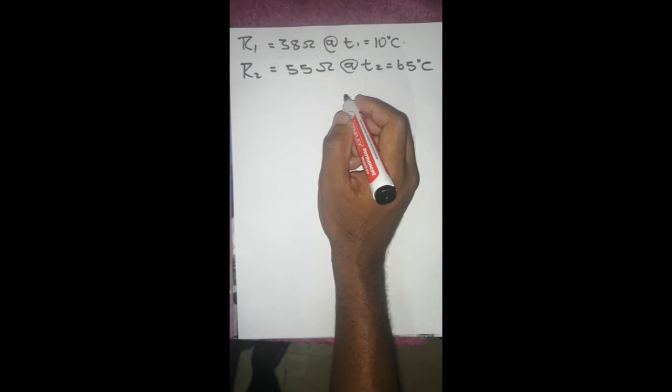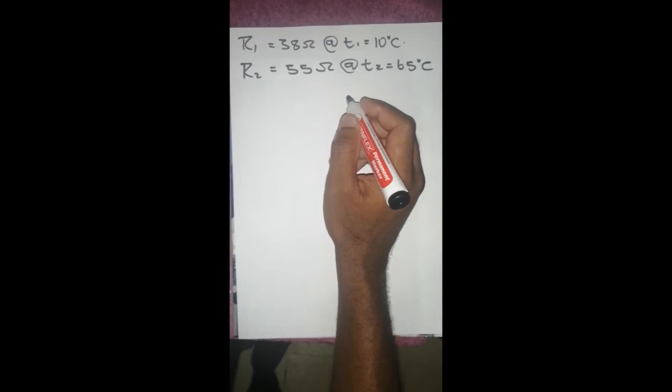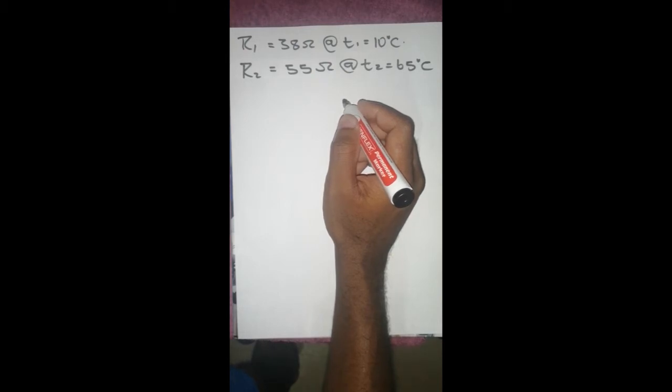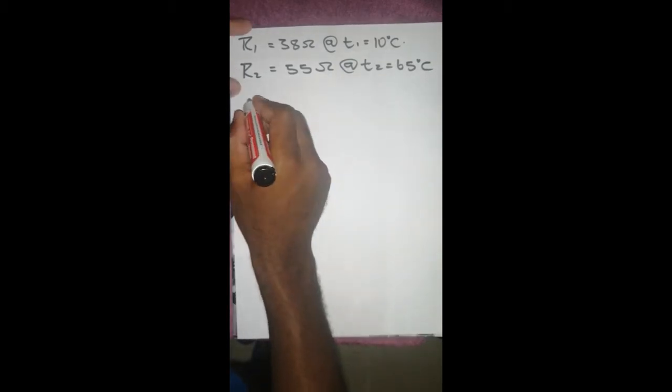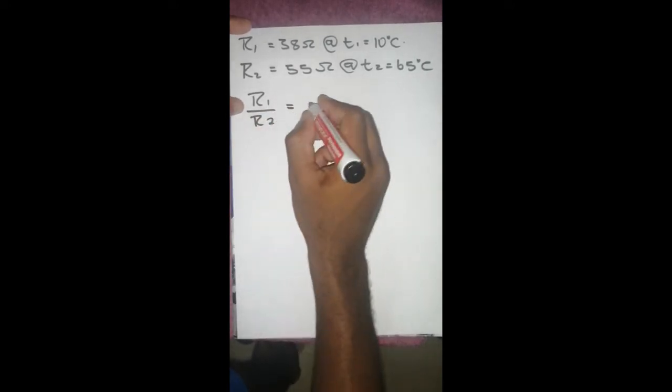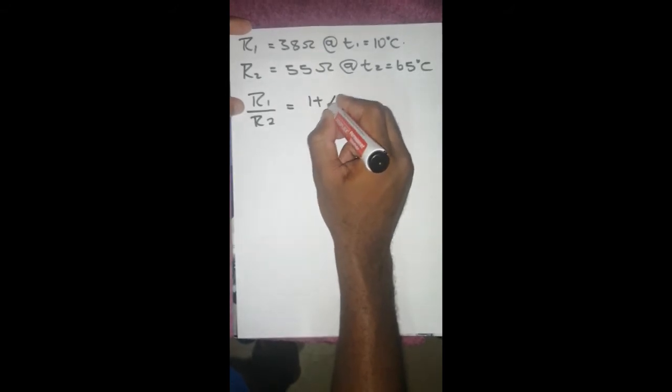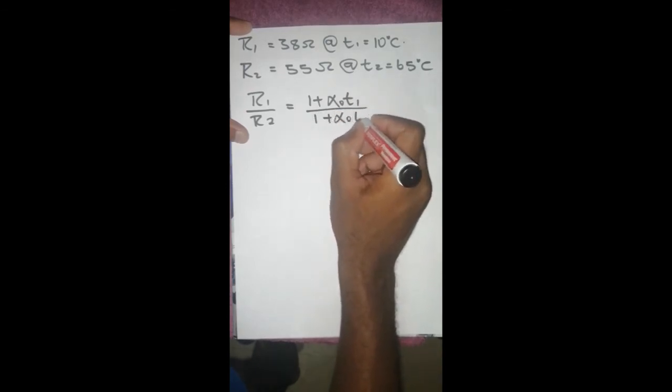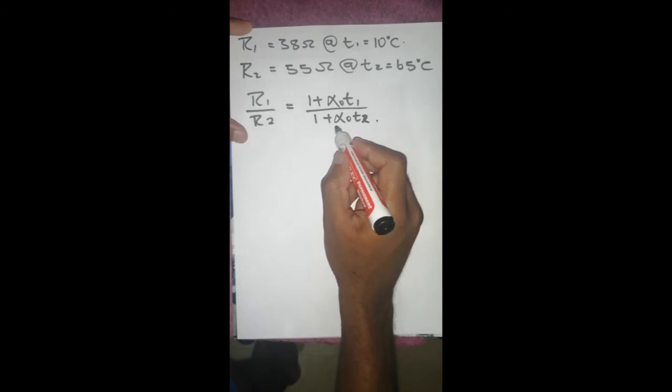And then from the formulas that we are given, you can see that the only formula that takes into consideration or allows us to use two values of resistors which neither of those resistors is at temperature equals to zero degrees is this formula: R1 over R2 equals to 1 plus alpha T1 over 1 plus alpha zero T2. And here we need alpha.